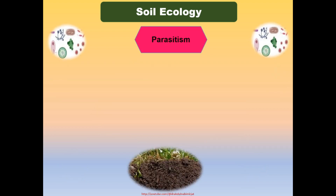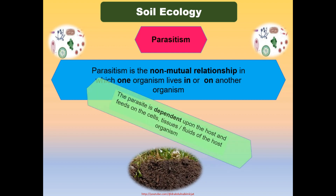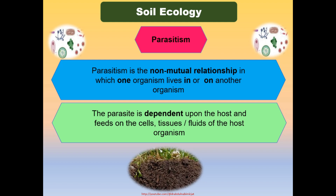Parasitism is the non-mutual relationship between two organisms in which one organism lives in or on another organism and may harm it. Parasites can be classified as ectoparasites and endoparasites based on attachment with the host. The parasite is dependent upon the host and feeds on the cells, tissues, or fluids of the host organism. Several types of parasites — consisting of fungi, protozoa, and nematodes — are found in soil.